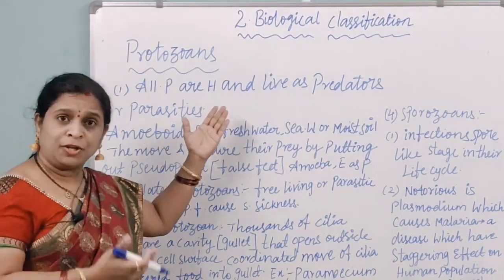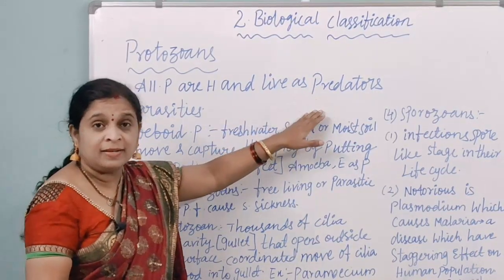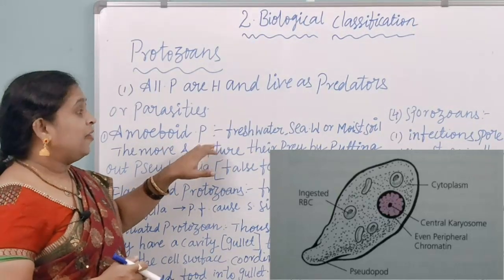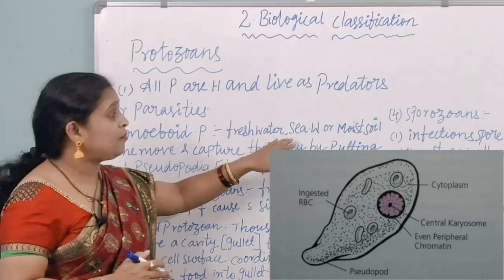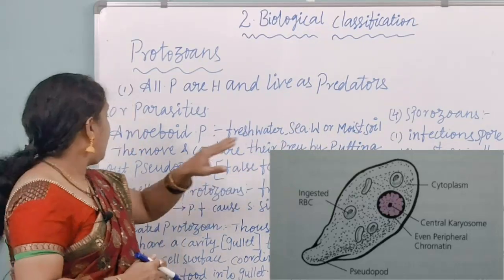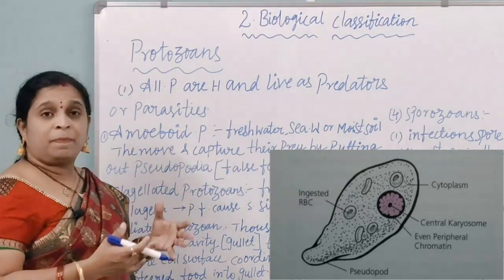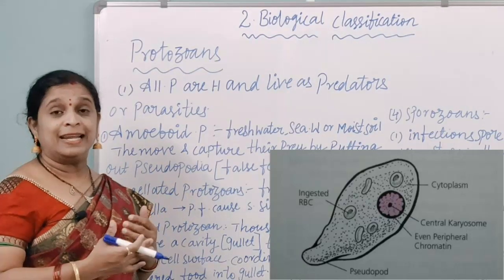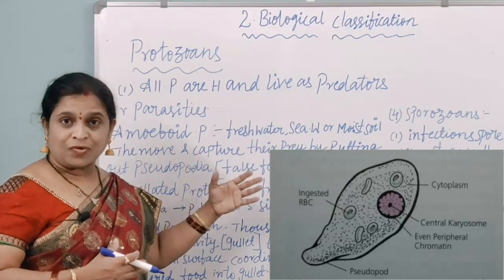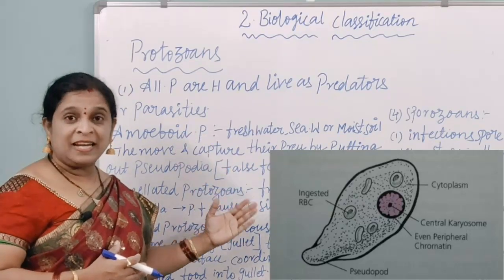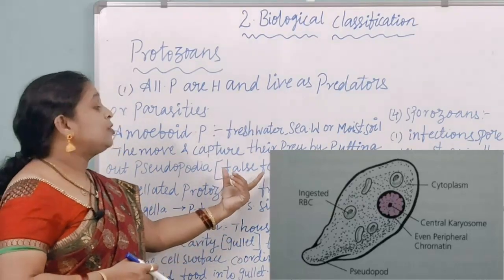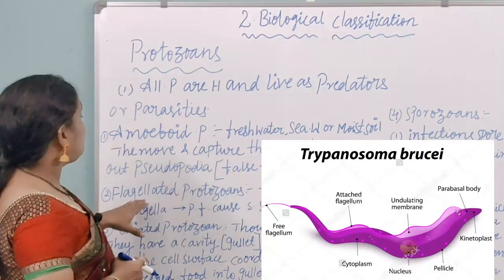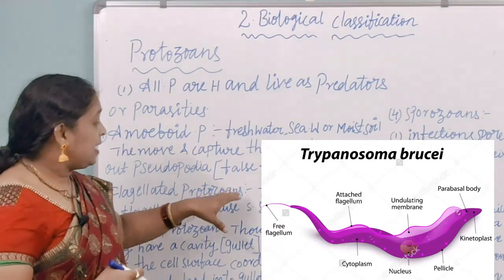All protozoans are heterotrophic and live as predators or parasites. The first type is amoeboid protozoans, which live in freshwater, seawater, and moist soil. They capture their prey by putting out pseudopodia — by stretching or moving false feet to engulf food material. An example is Amoeba.